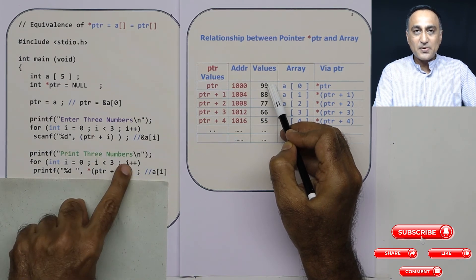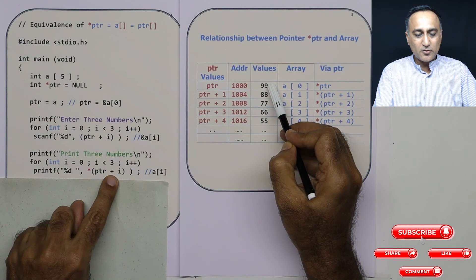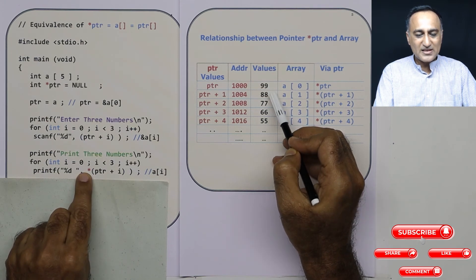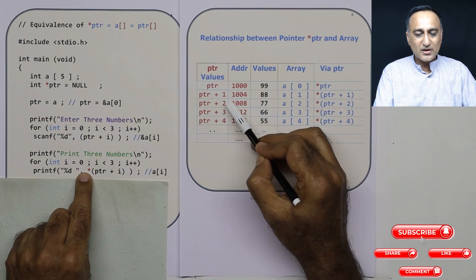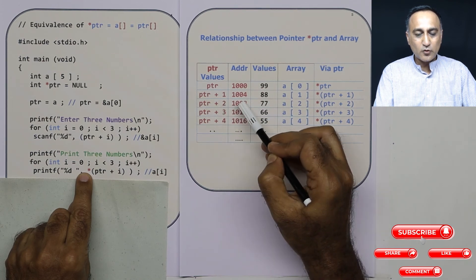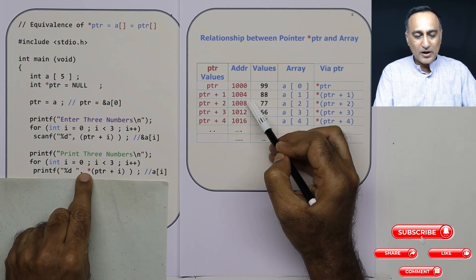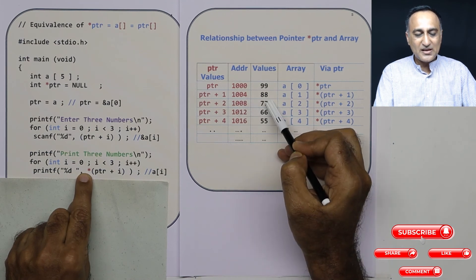i is increased by 1, i becomes 1, 1000 plus 1 into 4004, value at address 1004 is 88. i becomes 2, ptr plus 2 is 1000 plus 2 into 4008, value at address 1008 happens to be 77.